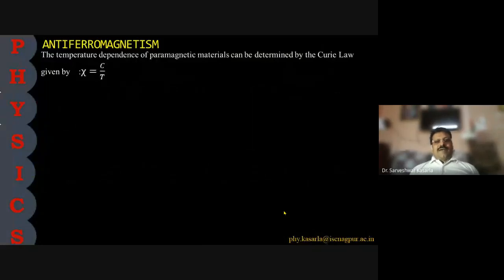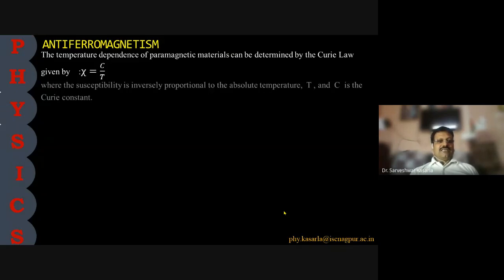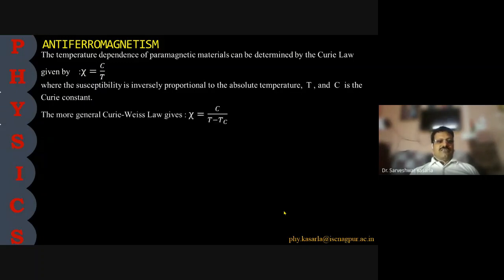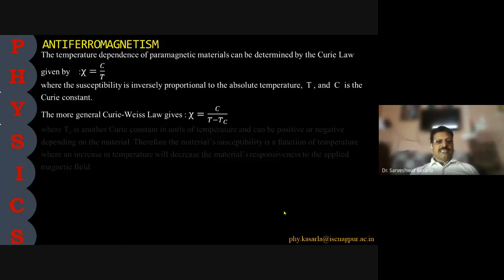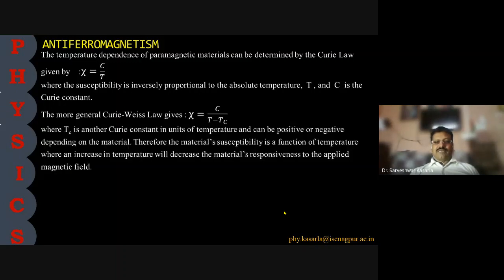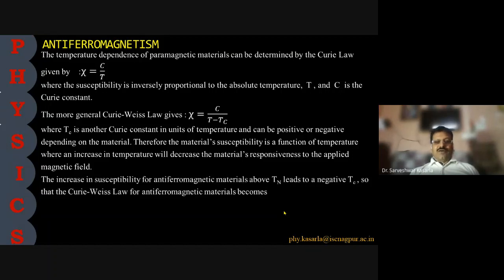The temperature dependence of paramagnetic materials is described by the Curie law ψ = C/T, where susceptibility is inversely proportional to temperature. The more general Curie-Weiss law is ψ = C/(T − T_C), where T_C is another Curie constant with temperature units, which can be positive or negative depending on the material. An increase in temperature decreases the material's responsiveness to the applied magnetic field. For anti-ferromagnetic materials above the Néel temperature, T_C is negative.